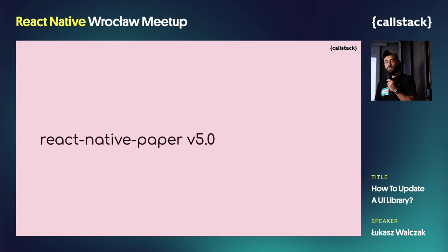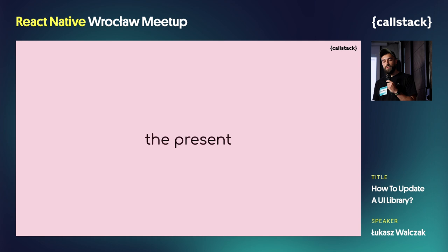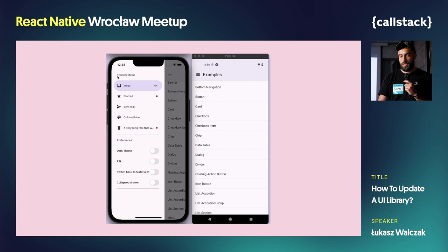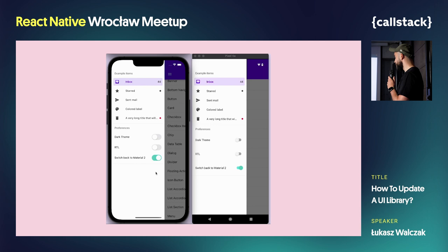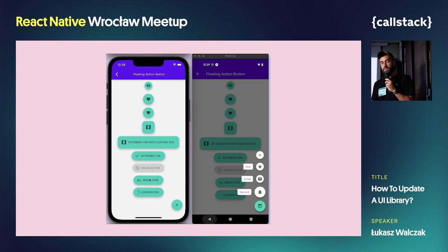Everything presented so far you can find in React Native Paper version 5, which is introducing Material U — the third and latest material design generation, providing a new visual style. And that's 100% true — the present is the result of the past and the future, which means that both material design generations are supported. In the example app, after opening the drawer, you can observe a switch which toggles the material design version, allowing you to switch back to Material 2 and compare how components have been changed.